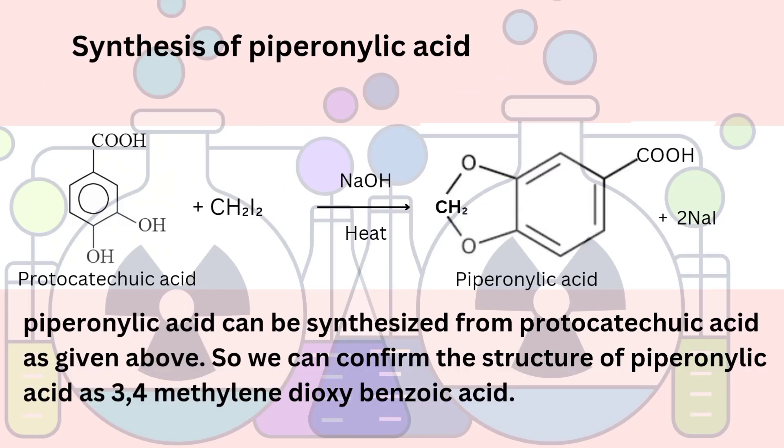Synthesis of piperonilic acid: Protocatechuic acid when heated with diiodomethane and sodium hydroxide gives piperonilic acid. So we can confirm the structure of piperonilic acid as 3,4-methylene-dioxy-benzoic acid.